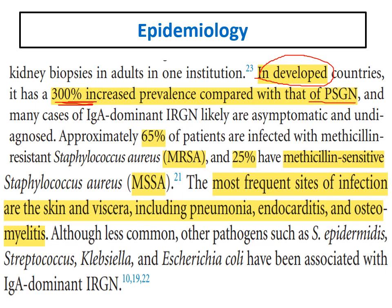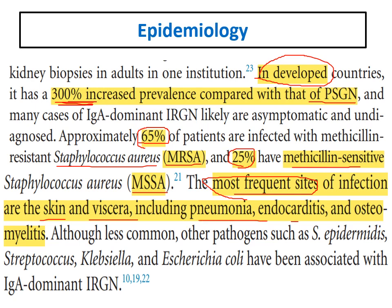Regarding causative organisms, 65% of patients are infected with MRSA and 25% with methicillin-sensitive Staphylococcus. The most common sites of infection are skin infections, followed by visceral infections such as pneumonia, endocarditis, and osteomyelitis. Other organisms such as Staph epidermidis and streptococcal species can be involved, but Staphylococcus is the most common.